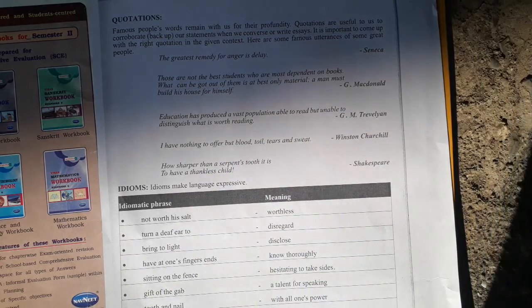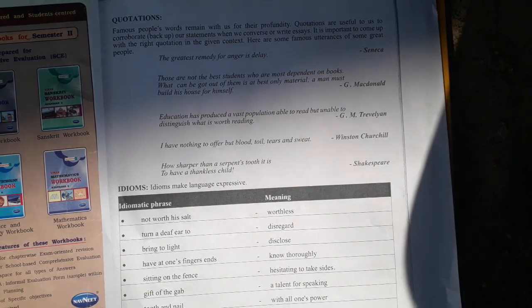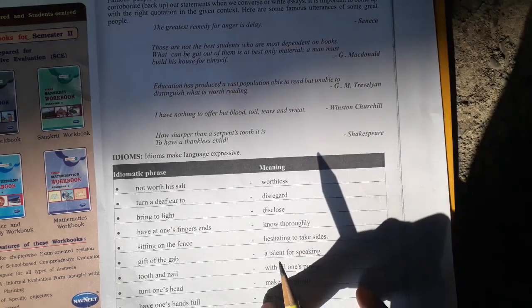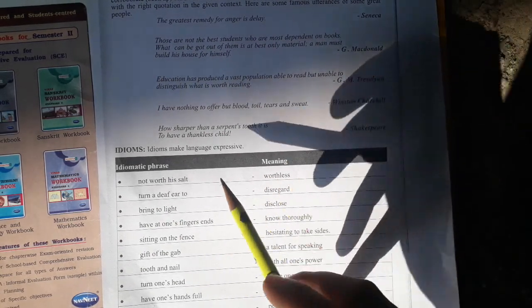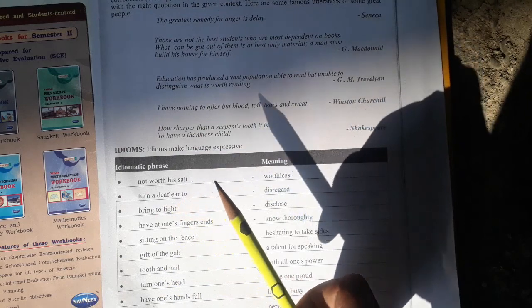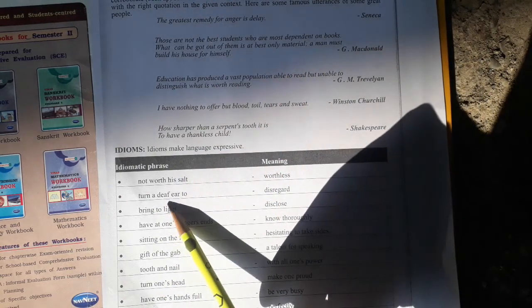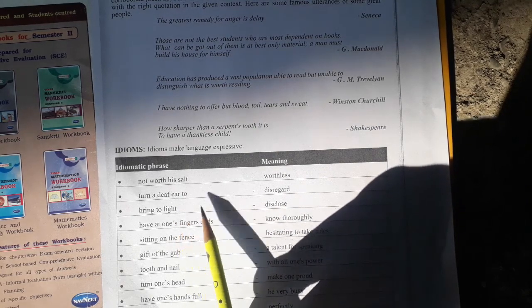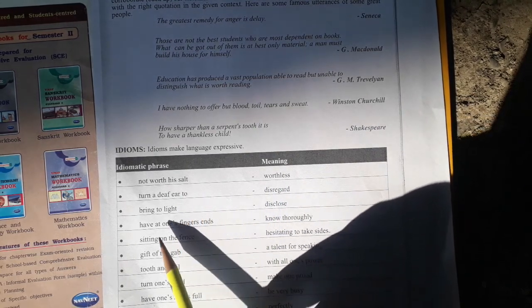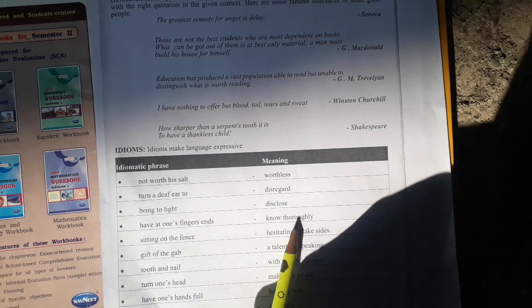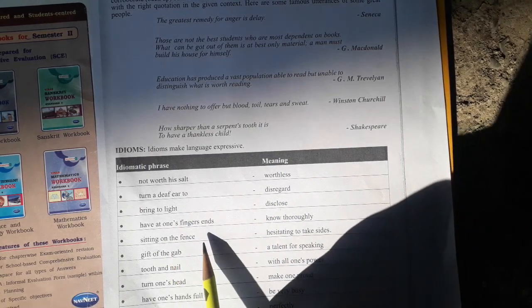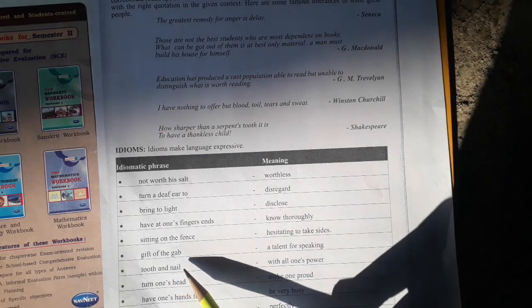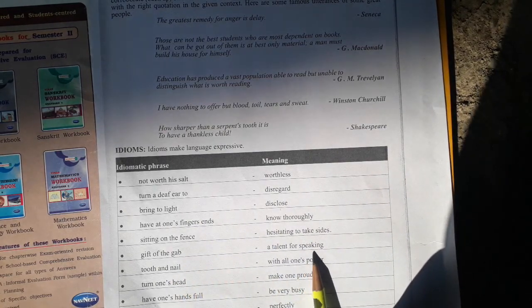Idioms: Idioms make language expressive. Idiomatic phrase and meaning: Not worth his salt, worthless. Turn a deaf ear to, disregard. Bring to light, disclose. Have at one's fingertips, know thoroughly. Sitting on the fence, hesitating to take sides. A gift of the gab, a talent for speaking.